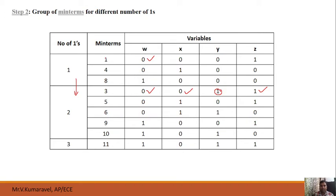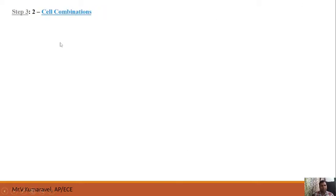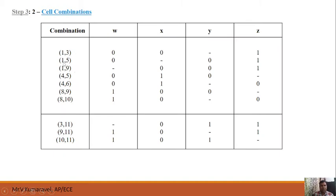Similarly, we check all other minterms. For 1 and 5: comparing their binary representations, only 1 bit deviates, so we can group 1 and 5. Continuing this process, we identify all valid 2-cell combinations: 1,3 — 1,5 — 1,9 — 4,5 — 4,6 — 8,9 — and 8,10.